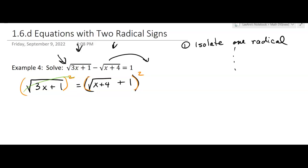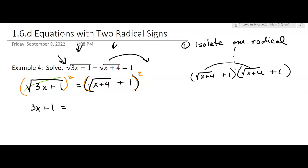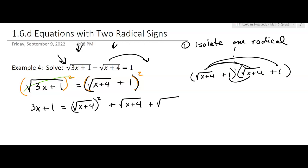On the left, the square root and the square cancel out and we have 3x plus 1. On the right hand side it's not quite as easy. We have the square root of x plus 4 plus 1, times itself. Foiling: this times this gives the square root of x plus 4 squared, then this times 1 gives the square root of x plus 4, and the insides give another square root of x plus 4.